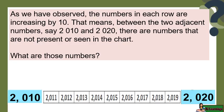The numbers are 2,011, 2,012, 2,013, 2,014, 2,015, 2,016, 2,017, 2,018, and 2,019.